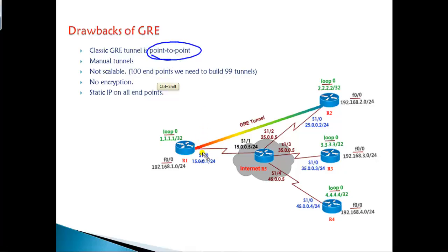If you want to build a tunnel from router 1 to router 2, we need to build one tunnel. If you want one more from router 1 to router 3, and router 1 to router 4, and so on. If you take an example of 100 endpoints and you want to have a full mesh where every router should be connected to every other router, we're going to end up building around 99 tunnels. All the tunnel configurations have to be done manually on each and every point.